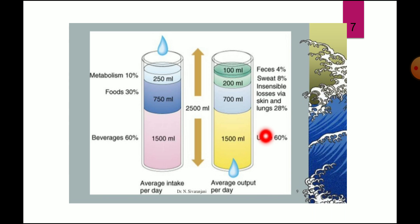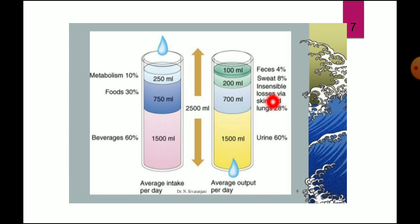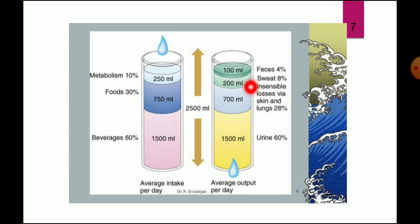Similarly, the output is also 2,500 ml. Out of it, 1,500 ml is in the urine, that is 60%. Others are feces at 4%, sweat around 8% — that is 200 ml. Then there are insensible losses via the skin and lungs — without our knowledge, some amount of water escapes through the skin and also through the lungs — corresponding to about 28%. So again, the total comes to 2,500 ml.